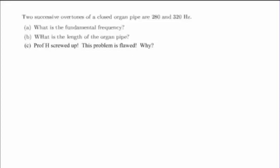Two successive overtones of a closed organ pipe are 280 and 320 Hertz. We're then asked to find the fundamental frequency and the length of the organ pipe.